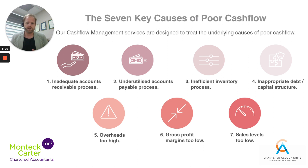Number two is an underutilized accounts payable process. This is around whether we could be working with our suppliers to create arrangements which allow us to hold on to our cash longer, and therefore better maintain our cash conversion cycle, reduce that down, and put less burden on the business.